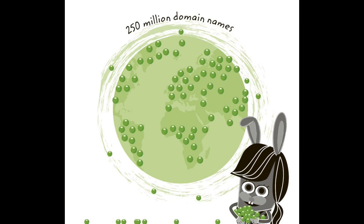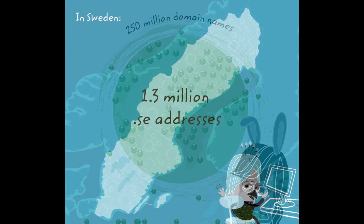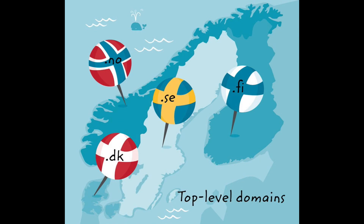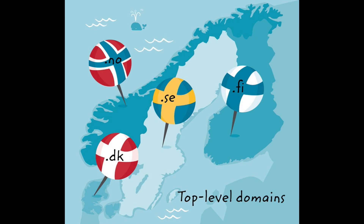There are around 250 million domain names in the world. In other words, there is unbelievably much to discover on the internet. Addresses that end in .se have a connection to Sweden, and there are around 1.3 million .se addresses. There are also other addresses that end with two letters that show which country a site has as its home. For example, Danish websites often have .dk at the end, while many sites in Finland end with .fi, and in Norway they use .no. All the countries in the world have a similar letter code. They're called top-level domains.